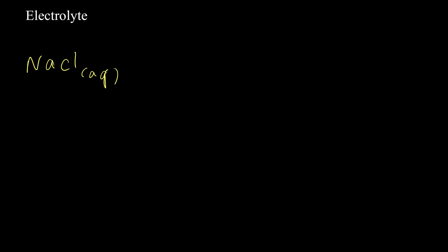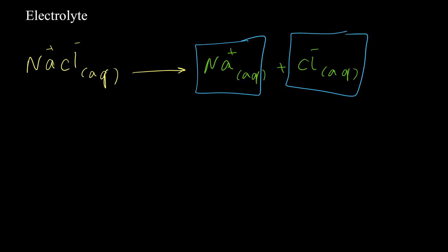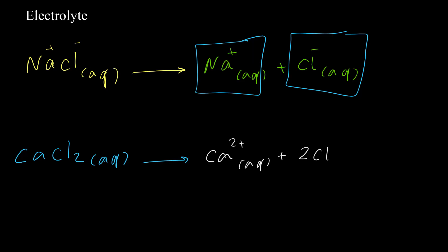Let's start with sodium chloride. Sodium chloride is soluble in water, and when we dissolve it in water it dissociates into cations and anions. Sodium chloride converts to sodium positive cation and chloride anion. The presence of these ions causes the conductivity of the aqueous solution of sodium chloride. Another example: calcium chloride aqueous solution produces calcium 2+ and two chloride anions. So calcium chloride is also an electrolyte.